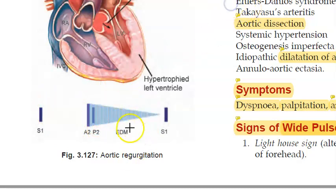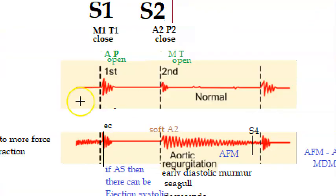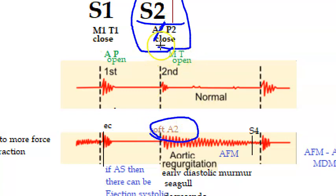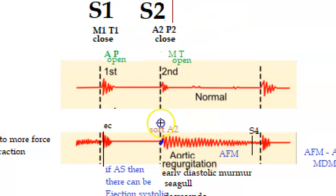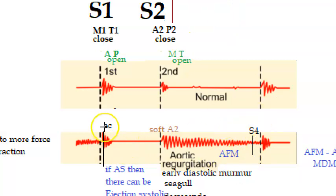If there is mitral valve involvement, you will also have a mid-diastolic murmur called the Austin Flint murmur. Looking at the normal heart sounds: S2 happens when A2 and P2 close. In aortic regurgitation, A2 has the problem — when it closes, blood is flowing back — so you can have a soft A2 or soft S2. The early diastolic murmur is also called a seagull-type murmur or decrescendo murmur. If the mitral valve is involved, you can have the mid-diastolic Austin Flint murmur.